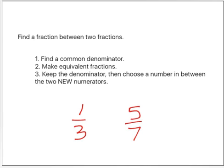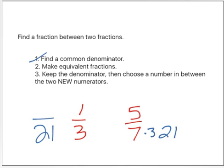Now I want you to give me a fraction in between one-third and five-sevenths. I'm going to find a common denominator. Three times seven is twenty-one, so I'm going to use twenty-one for my common denominator. Now seven times three is twenty-one, so five times three is fifteen. On the left side, three times seven is twenty-one, and one times seven is seven. I have my equivalent fractions.